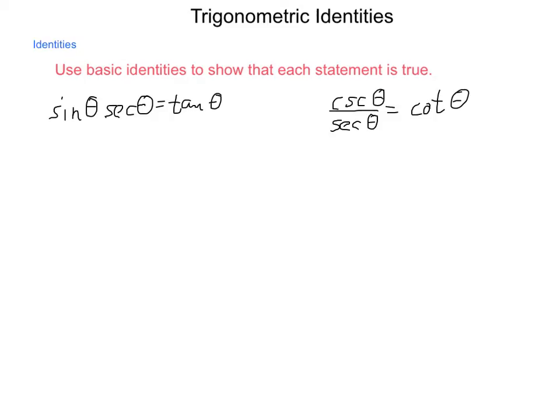We're now going to be starting a unit and series of lessons on trigonometric identities and equations, beginning with trigonometric identities. A trigonometric identity is one where, using different trigonometric functions — sine, cosine, tangent, secant, cosecant, cotangent — we're able to arrive at the same value, the same answer, in all cases where the domain exists, using different functions.